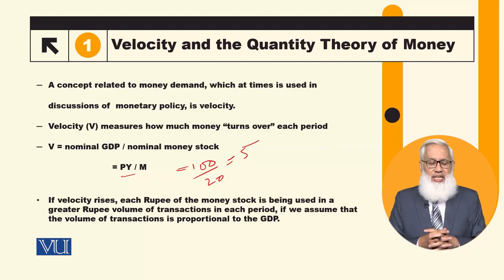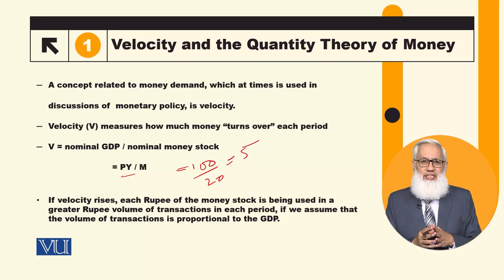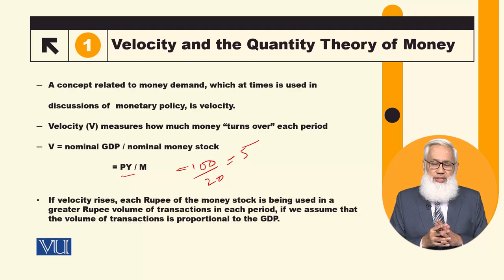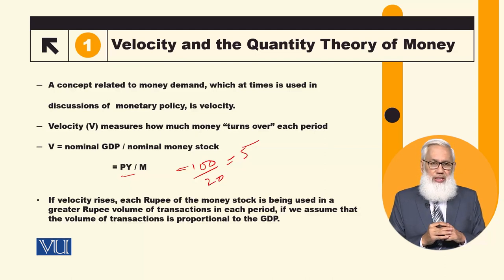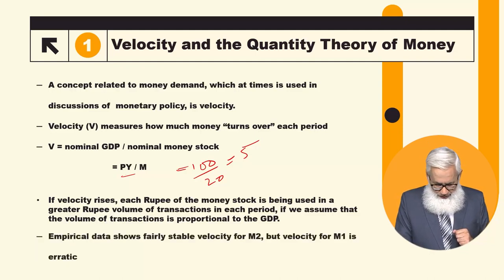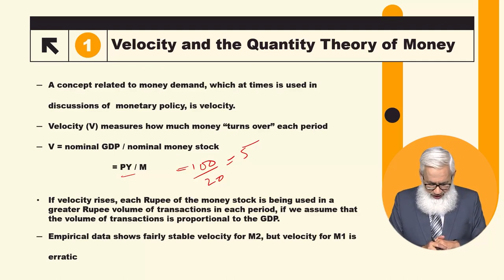An underlying assumption here is that the volume of transactions is proportional to GDP. Total transactions in an economy include newly produced goods and services as well as previously produced goods and services. When we say this depends on nominal GDP, the underlying assumption is that total transactions maintain a constant proportion with nominal GDP. We will also discuss what empirical data tells us about velocity.